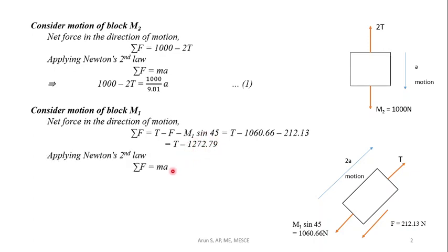Applying Newton's second law, sigma F equals ma. The mass is 1500 divided by 9.81, and acceleration is 2a. Substituting, we get this equation.